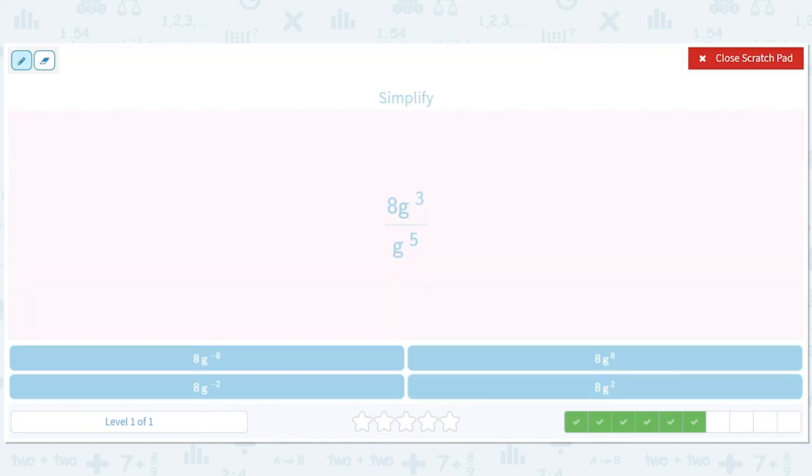How about this? Well, there's nothing on the bottom. So it's just 8. If you like, you can also put a secret 1 there and make it 8 over 1. But it's just 8.